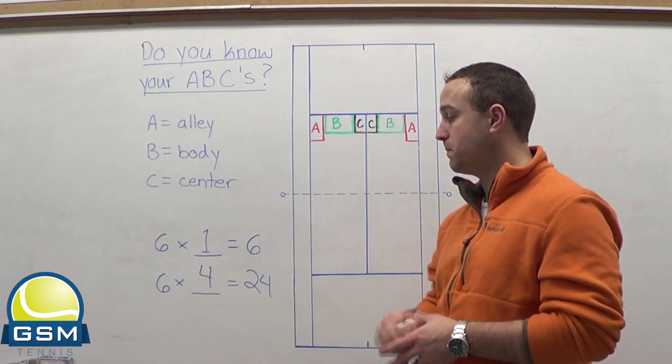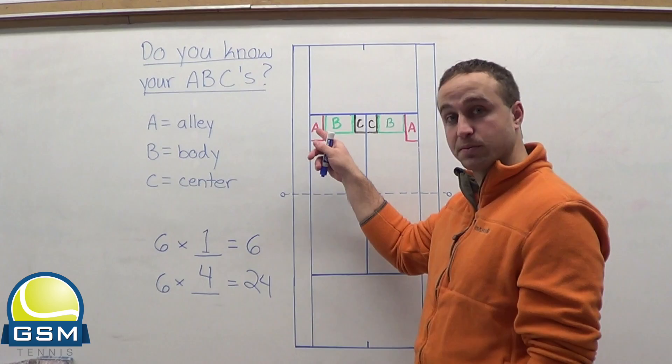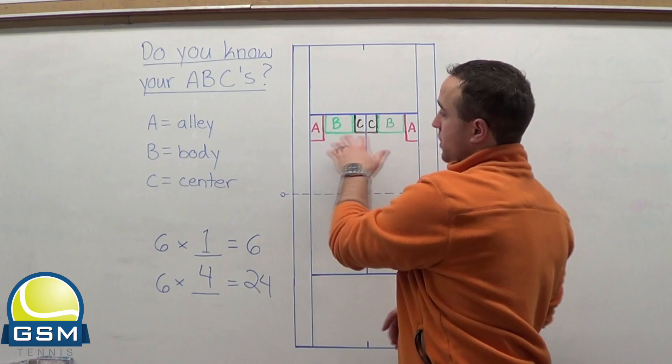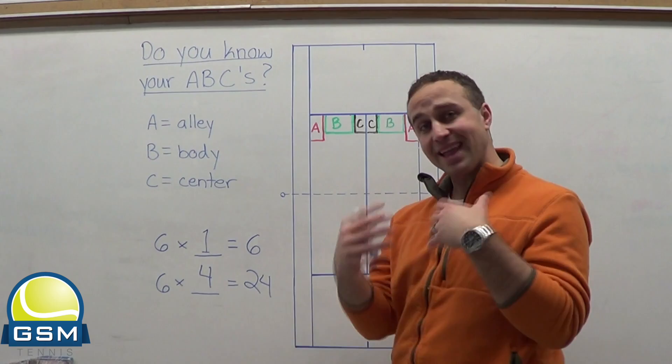That means you can hit a slice serve out here, you can hit a kick serve out here, a topspin serve out here, a flat serve out here, and then the same thing here, and then the same thing here. I mean, these three locations are the most important thing for your serving. You need to be able to hit those three locations and then start working on the different types of serves.